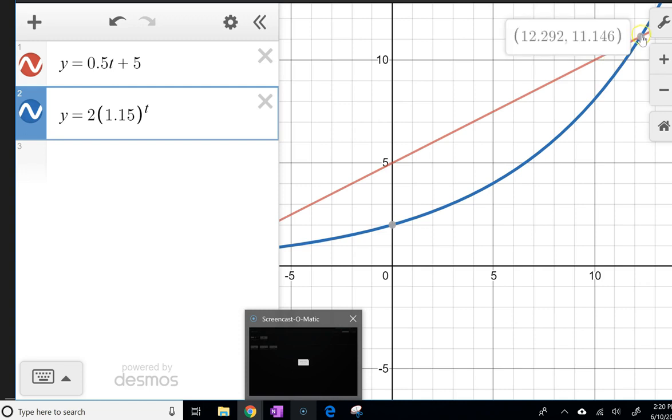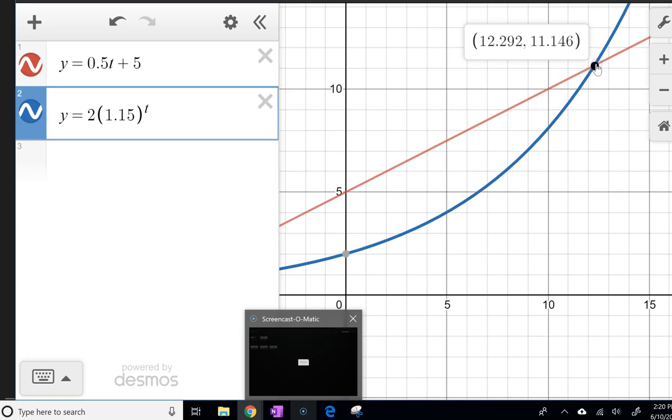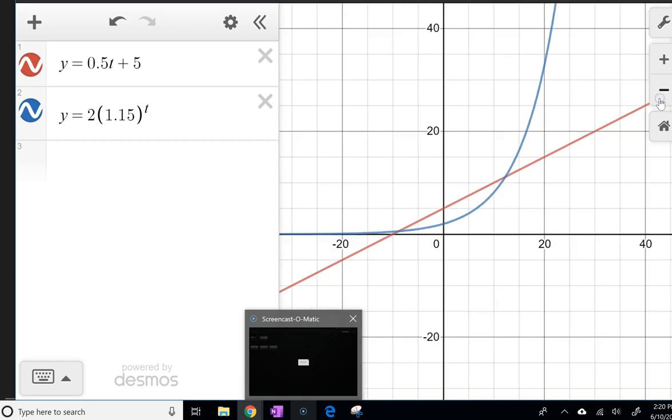But you'll see there's this point here where they are equal. So after 12.292 or 12.3 years, the company's incomes are going to be equal. And then from that point, if we continue to zoom out, you're going to see that over the long haul, which is what we're typically investing in when we're looking at saving for retirement.